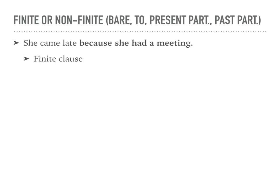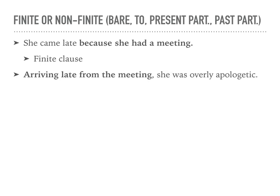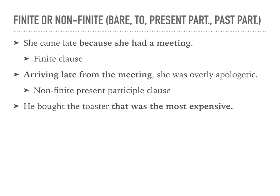This is a finite clause. We know it's a finite clause because it has a conjugated verb: 'had.' Let's look at our next sentence: 'Arriving late from the meeting, she was overly apologetic.' This is a non-finite present participle clause, and we can see that because the word 'arriving' uses the present participle form. Our next sentence is 'He bought the toaster that was the most expensive.' 'That was the most expensive' is a finite clause because the word 'was' is conjugated.